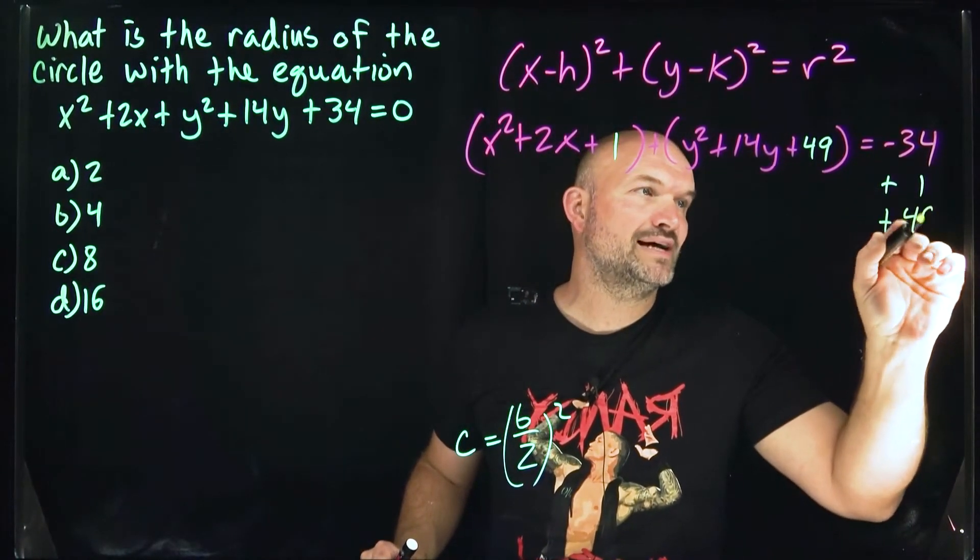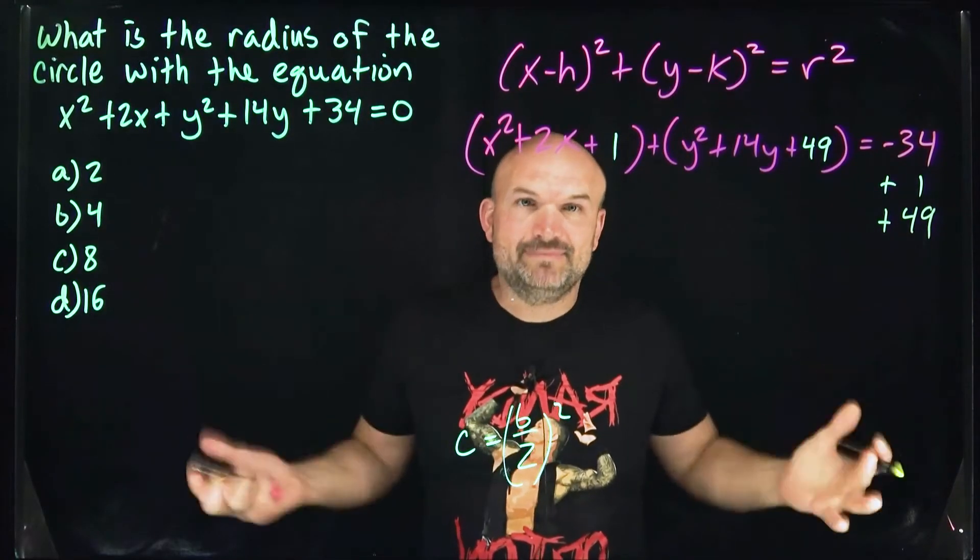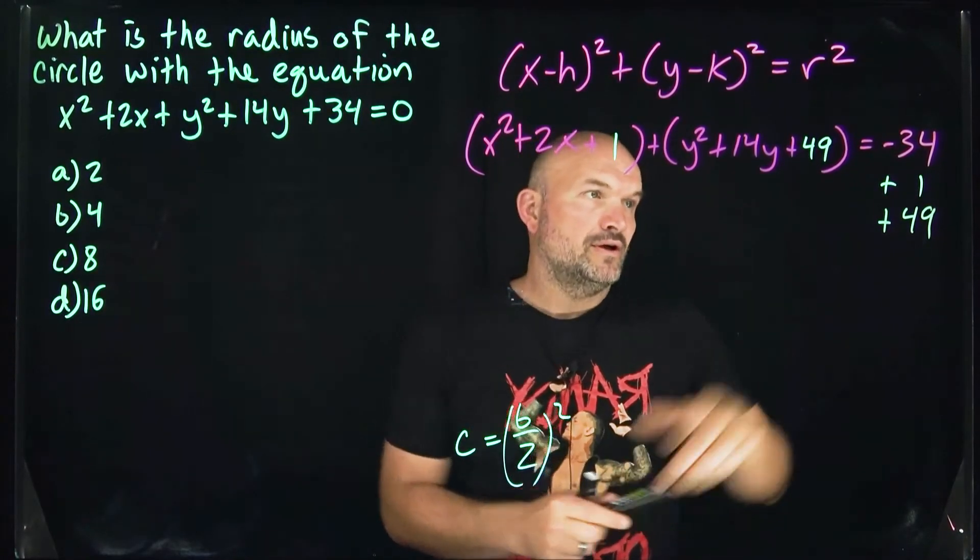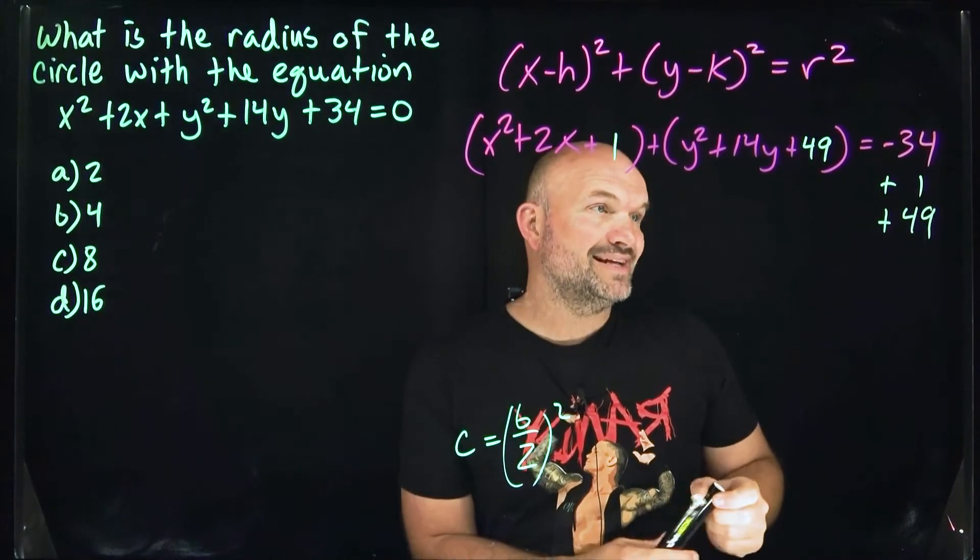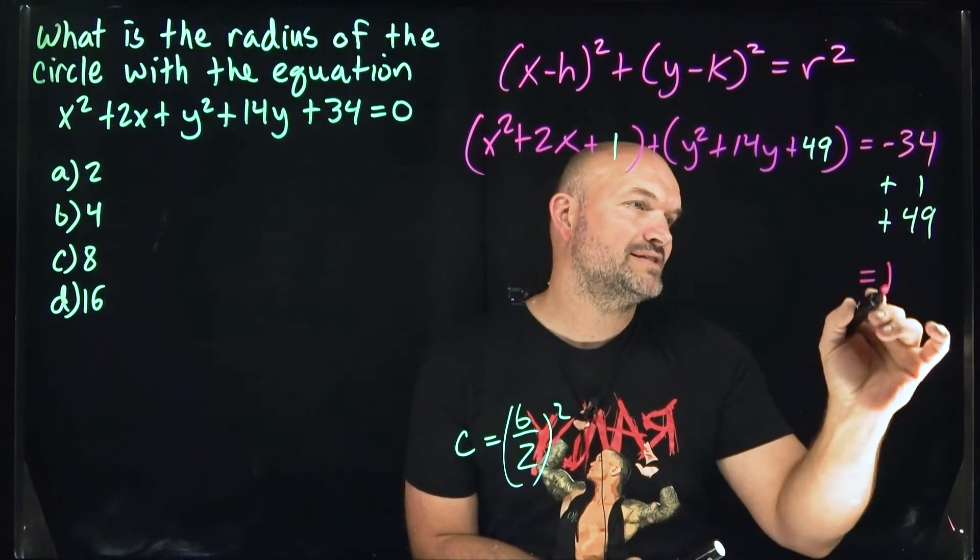So I'll add 49 to this side to keep the equation balanced. 49 plus 1 is 50. 50 plus negative 34 gives me positive 16.